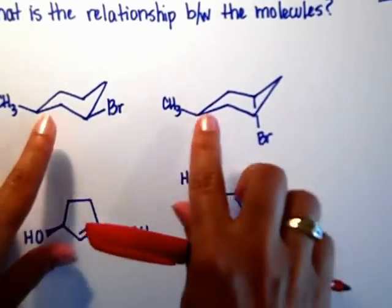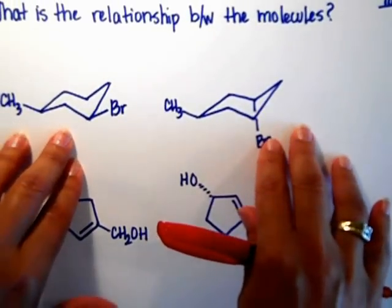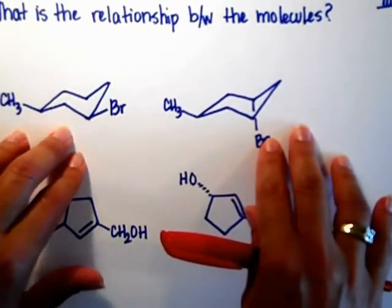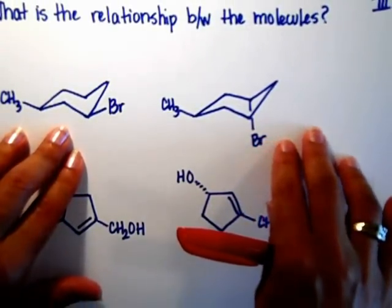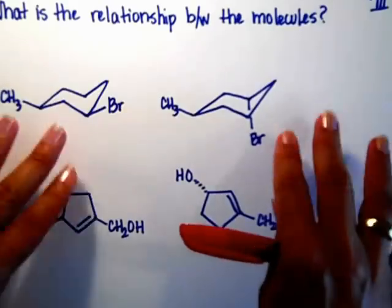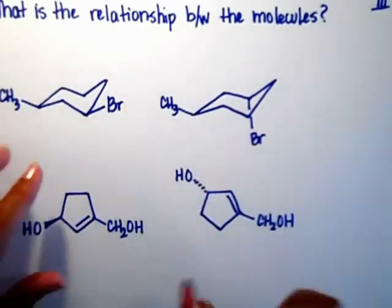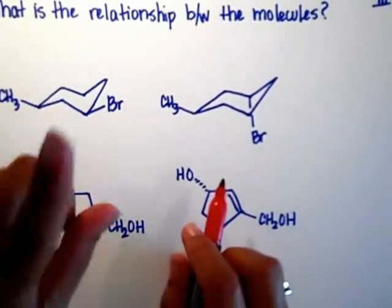One, two, three. So these two molecules are the 1-bromo-3-methylcyclohexane — that's perfectly fine.